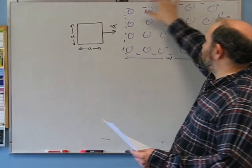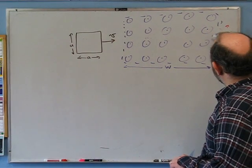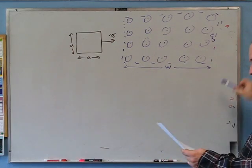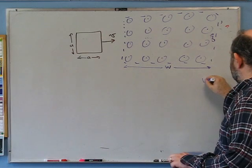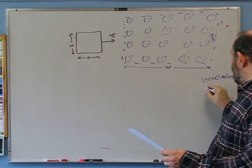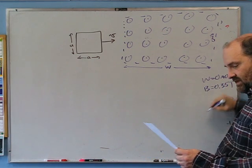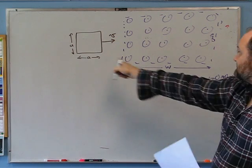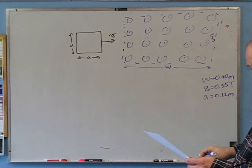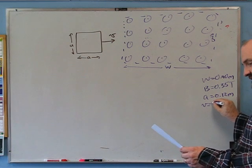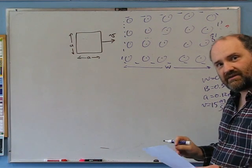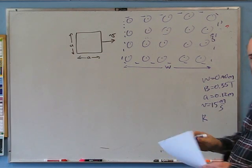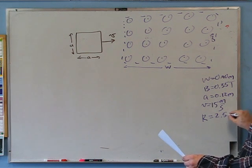In the third problem, we have a region of magnetic field B coming out of the page, but limited to a region W wide — where W = 0.40 meters — with no magnetic field outside. The magnetic field strength is 0.35 tesla. A square loop of wire is a = 0.12 meters on a side — notice a is less than W. The wire loop speed is maintained at 15 meters per second, and there's a resistance of 2.5 ohms in the wire. We need to plot the current through the loop as a function of time, labeled numerically, with positive current defined as the direction indicated in the picture.